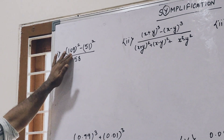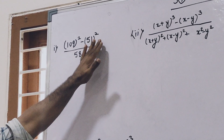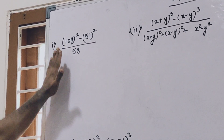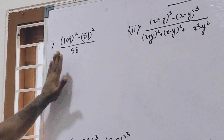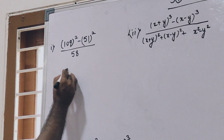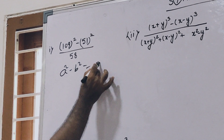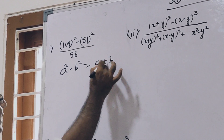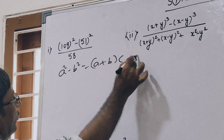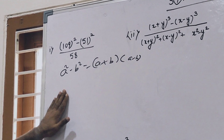For the first question: 109 squared minus 51 squared, divided by 58. You know the formula: a squared minus b squared equals (a+b) into (a-b). This is the basic formula.